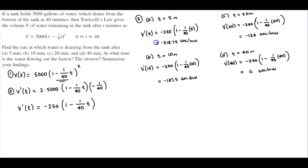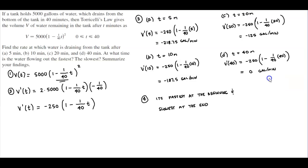The question asks at what time is the water flowing out the fastest and the slowest. We can see that it's fastest at the beginning and slowest at the end, because the rate is highest early on and decreases to zero by the end.